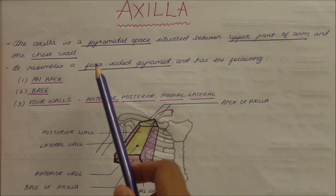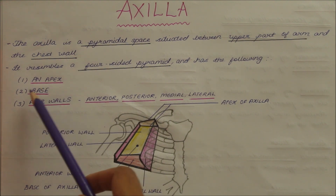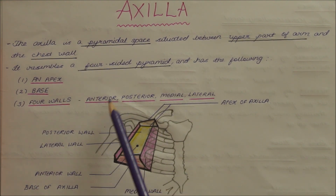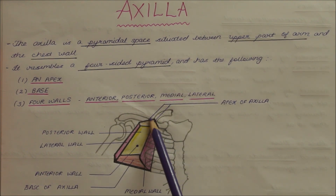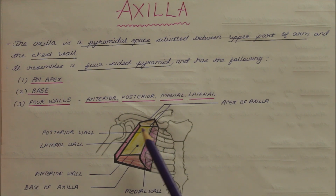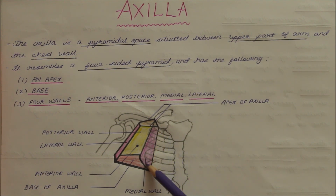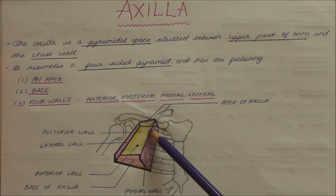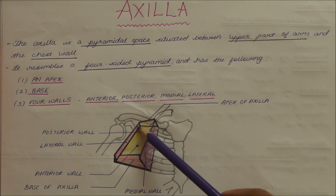It resembles a four-sided pyramid and has the following parts: an apex, a base, and four walls — the anterior, posterior, medial and lateral wall. As you can see in this picture, this is the apex, this is the base, and the four walls are the anterior wall, the posterior wall indicated in yellow, the medial wall in pink directed towards the body, and the lateral wall in pink directed away from the body.